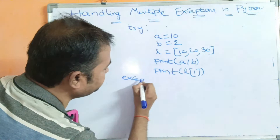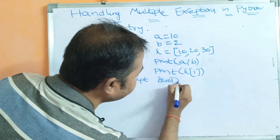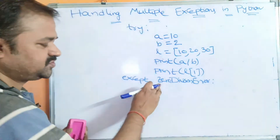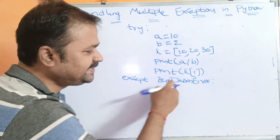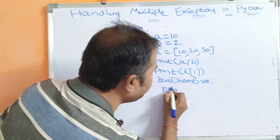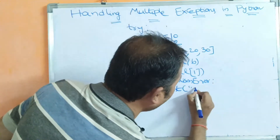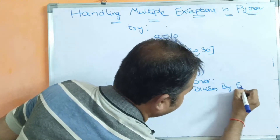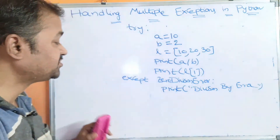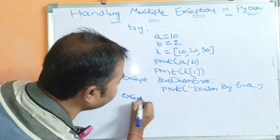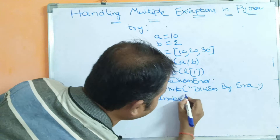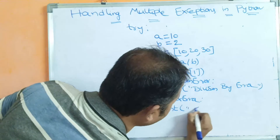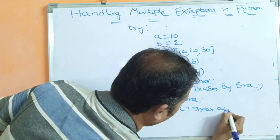We then write the except blocks. The first except handles ZeroDivisionError — note that Z, D, and E are uppercase letters as per class naming conventions. We print a message like 'division by zero error'. The second except handles IndexError, where I and E are uppercase letters, and we print 'index is out of range'.